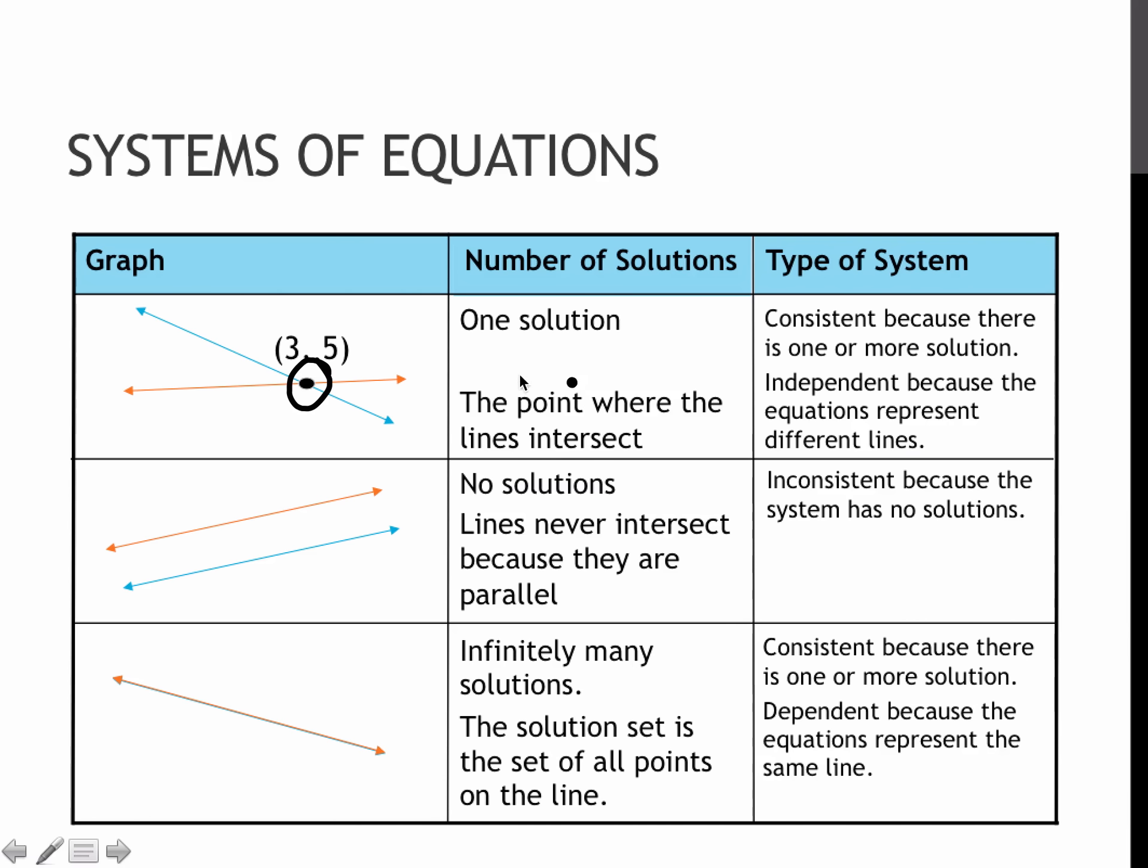So you would have one solution. We would write it as an ordered pair, and it would be whatever the coordinates are for that point where the two lines cross. This is considered consistent because whenever we have a solution, it's considered consistent. And it's independent because the equations represent different lines.